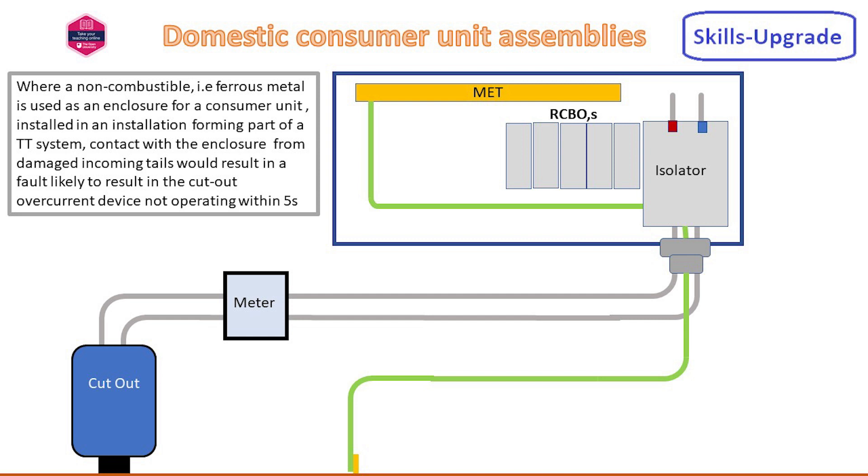With the requirement for non-combustible consumer units to be installed in domestic premises, an issue with TT systems arose. A fault due to the incoming tails coming into contact with the enclosure would result in a disconnection time to clear the fault of over five seconds.